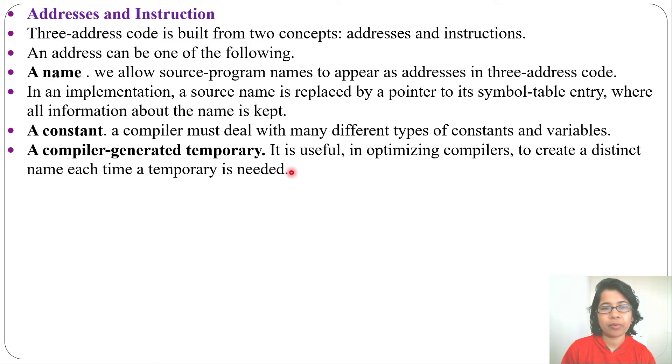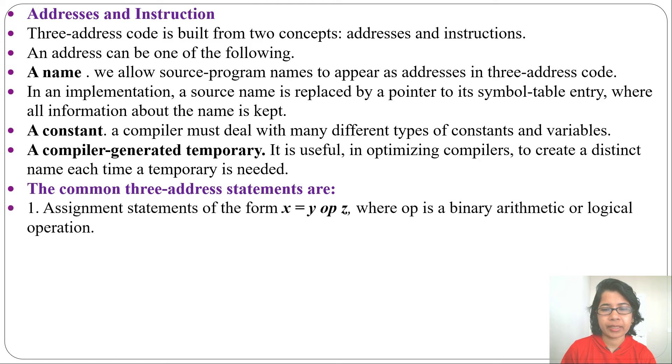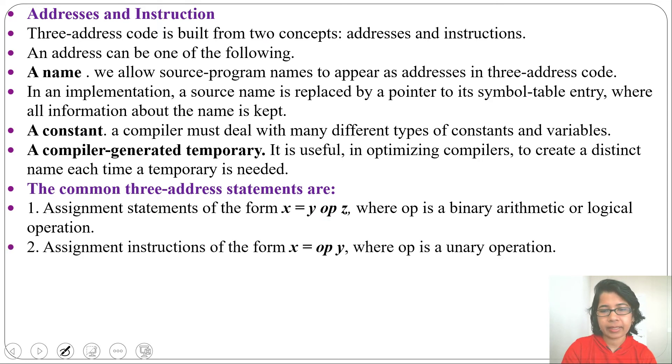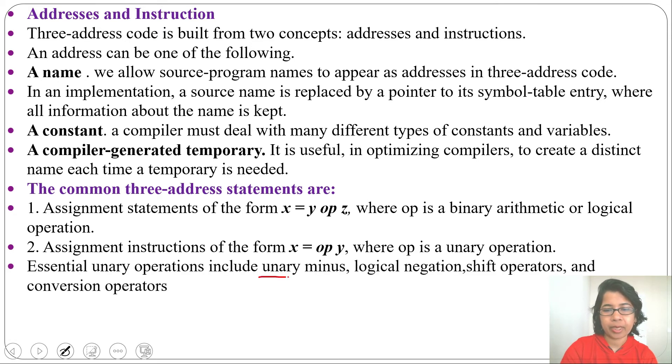Let's discuss some common three-address statement formats. First, x = y op z, where x, y, z can be names, constants, or compiler-generated temporaries, while op stands for arithmetic or logical operations. Next, x = op y, where op is a unary operation. It can be unary minus, logical negation, shift operators, and conversion operators.